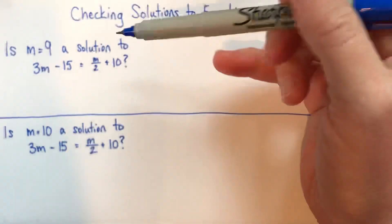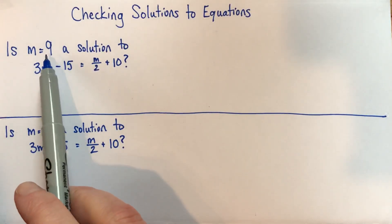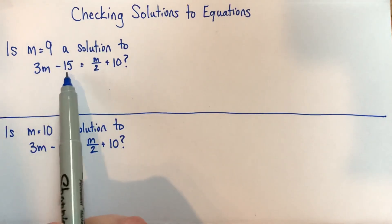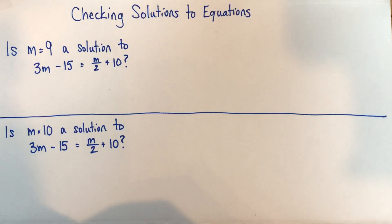Alright, so we have two questions here. They're almost the same. The first is, is m equals 9 a solution to 3m subtract 15 equals m divided by 2 plus 10? And the second is, is m equals 10 a solution to this equation? Same equation in both ones.